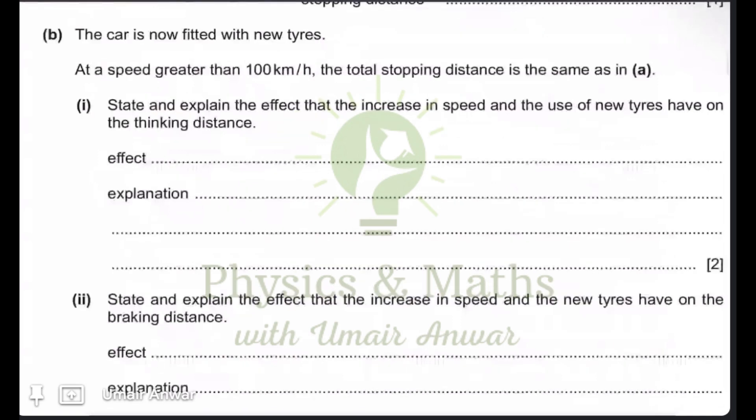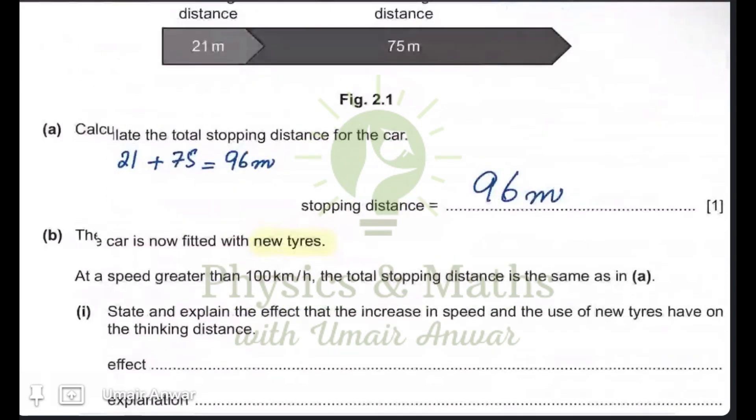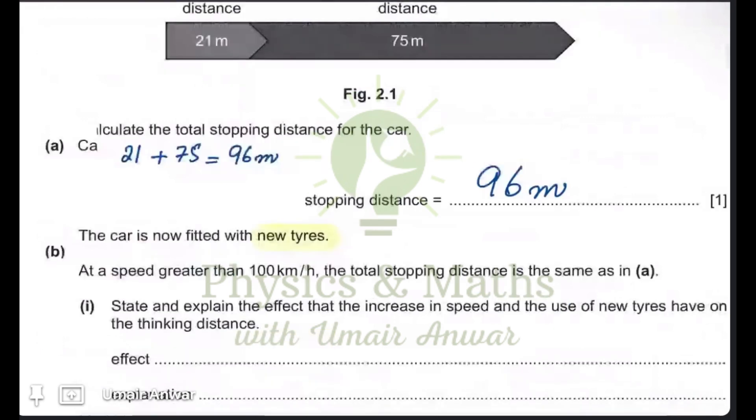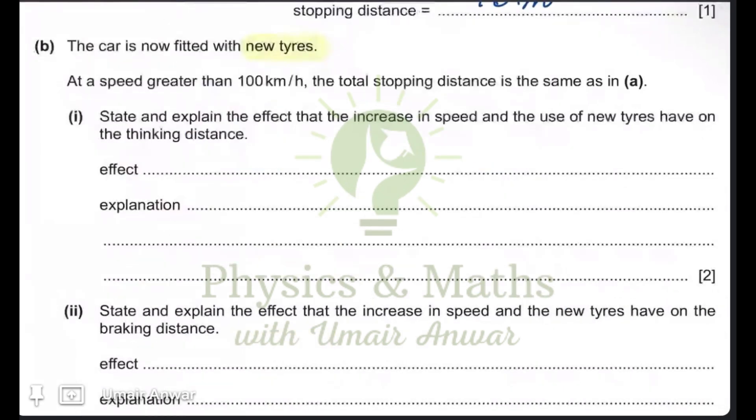The car is now fitted with new tires. So the tires have now been changed. At a speed greater than 100 kilometers, the total stopping distance is the same as in the previous part. Now, here the car was moving at a speed of 100 kilometers per hour. And with the newly fitted tires, the speed of greater than 100 kilometers per hour, the stopping distance remains the same.